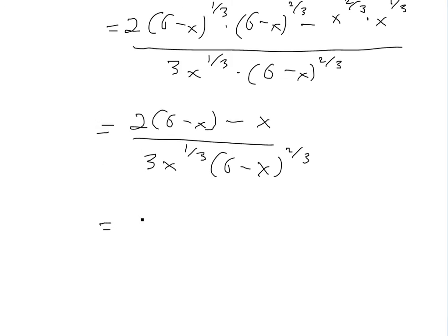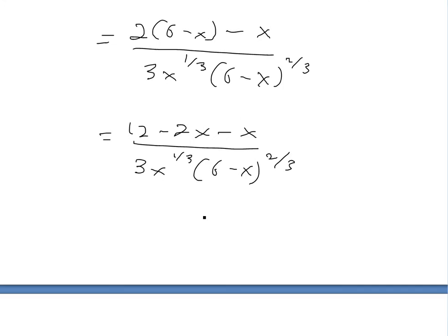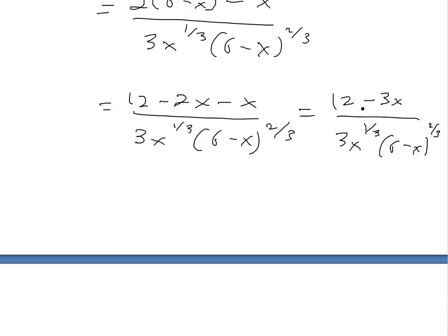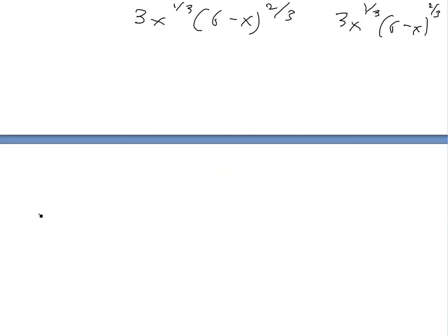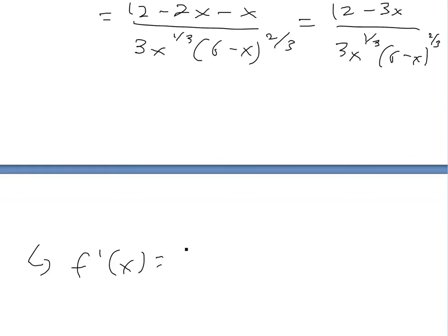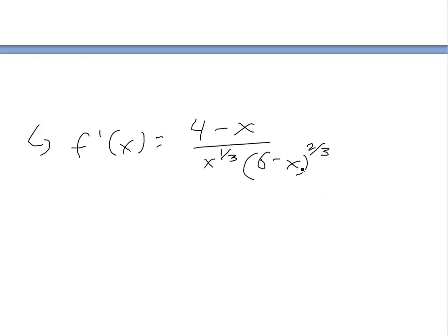So now we can multiply this out. We're going to get 12 minus 2x minus x, divided by that denominator. So now we have 12 minus 3x divided by this denominator over here. Now we can divide the 3 out from the top, because 12 divided by 3 is 4 and 3 divided by 3 is 1, so our final answer is f'(x) equals (4 minus x) divided by x^(1/3) times (6 minus x)^(2/3). So this is our first derivative. That was pretty straightforward.